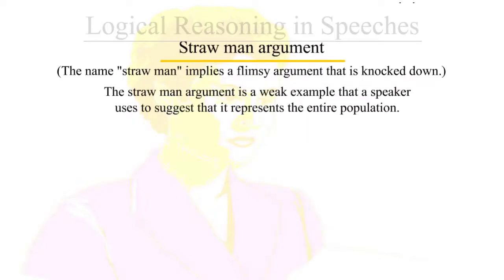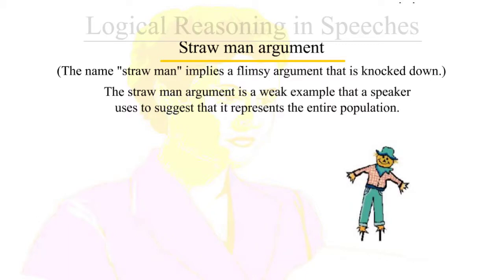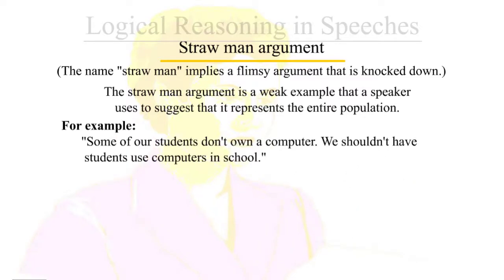A variation of ad absurdum is the straw man argument. The name straw man implies a flimsy argument that is knocked down. The straw man argument is a weak example that a speaker uses to suggest it represents the entire population. For example, 'Some of our students don't own a computer, so we shouldn't have students use computers in school.'